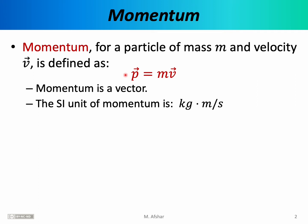The momentum vector can be longer or shorter than the velocity vector, depending on what the mass is. If the mass is 5 kilograms, then the momentum vector is going to point in the same direction as the velocity vector, but it will be 5 times larger. If the mass is 0.2 kilograms, then velocity and momentum will point in the same direction, but momentum will be one fifth the length of velocity.